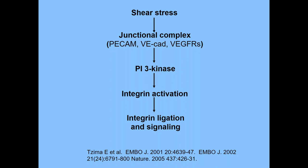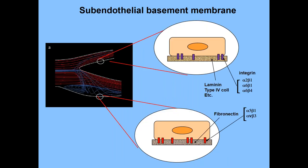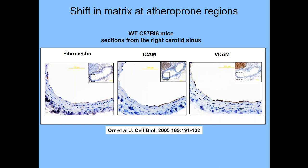I was interested in the notion that integrin ligation played a role in shear stress signaling because endothelial basement membranes are not always the same. In stable vessels, the basement membrane is made principally of classic basement membrane proteins — laminin and type IV collagen. But in remodeling vessels undergoing angiogenesis, inflammation, or developmental processes, fibronectin and other provisional matrix proteins are deposited. So when Wayne Orr came to my lab as a postdoc in the early 2000s, he did a truly seminal experiment.